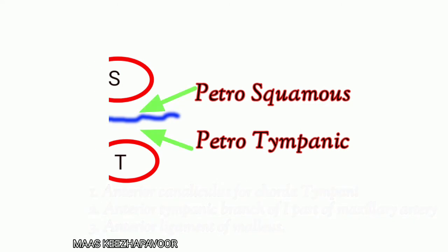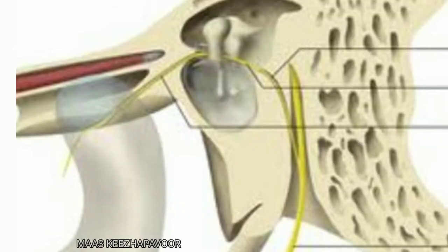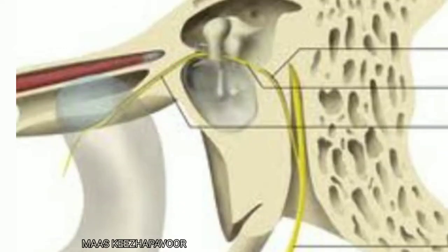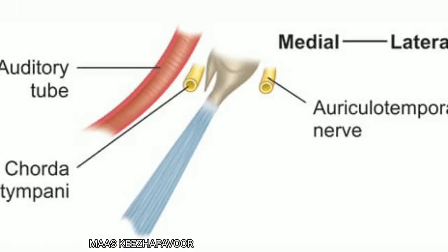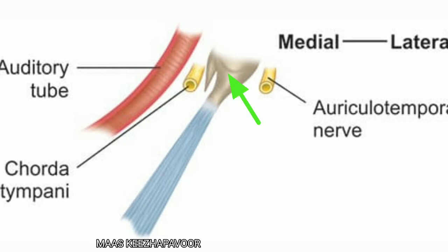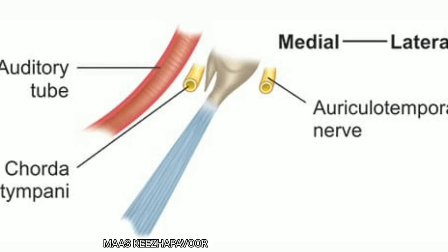The chorda tympani nerve has come out through the anterior canaliculus. It then runs medial to the spine of the sphenoid, making a groove in it. Remember, lateral to the spine of the sphenoid is the auriculotemporal nerve.